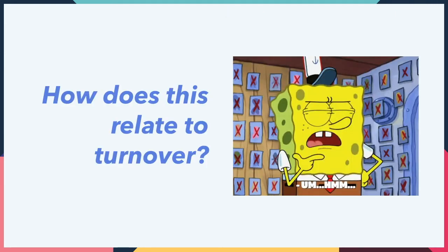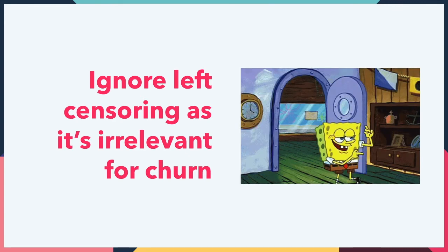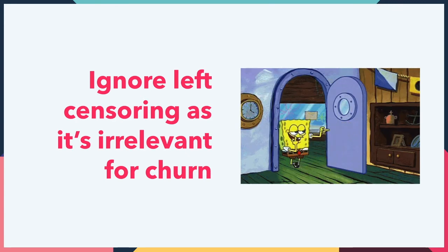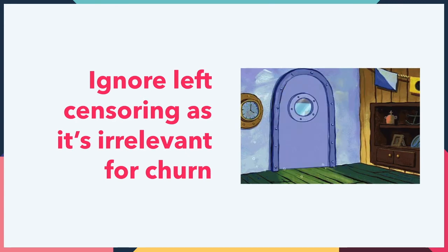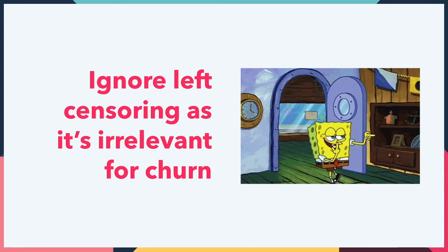So how does this relate to turnover? Well, in actuality it is basically the same process, except for a few things. Firstly, we can ignore left censoring, as it is irrelevant for churn. We know when an employee leaves the company, and we only deal with right censoring — employees still present at the company.